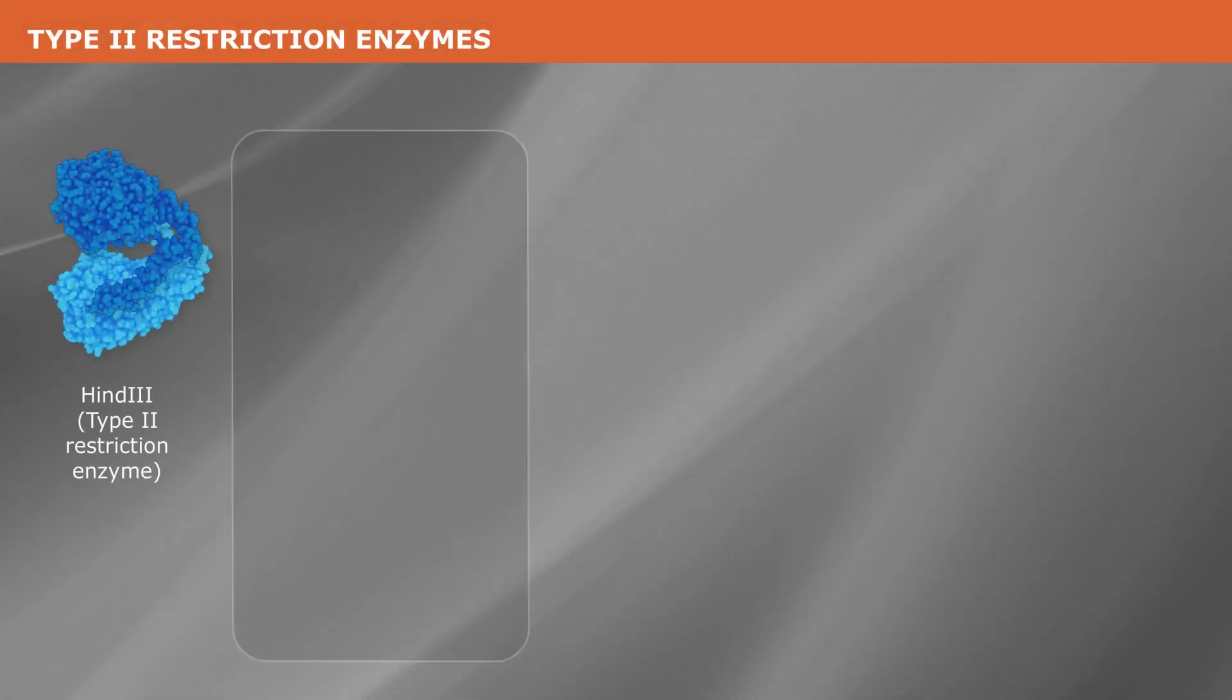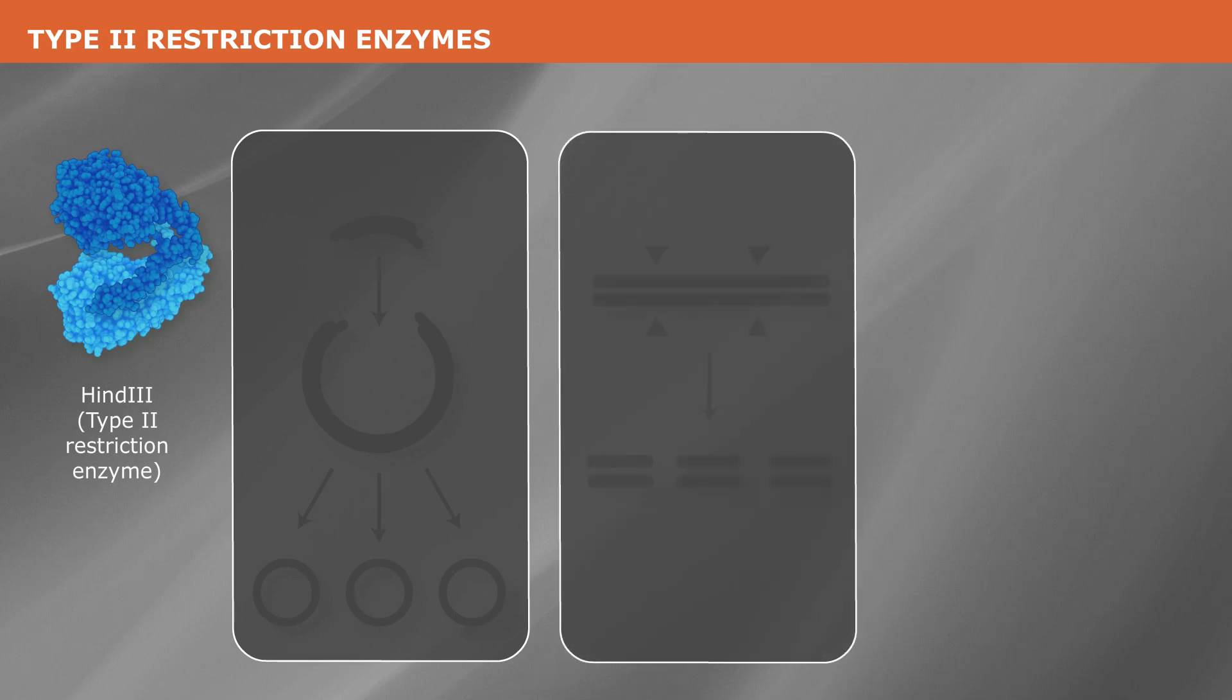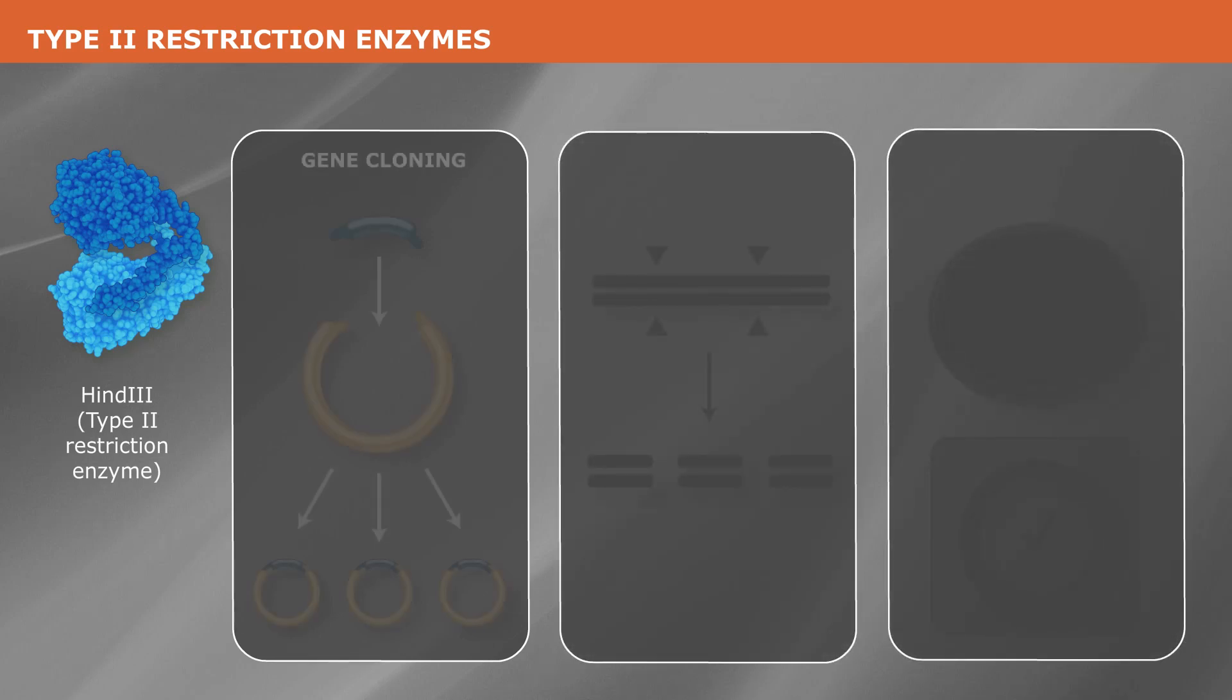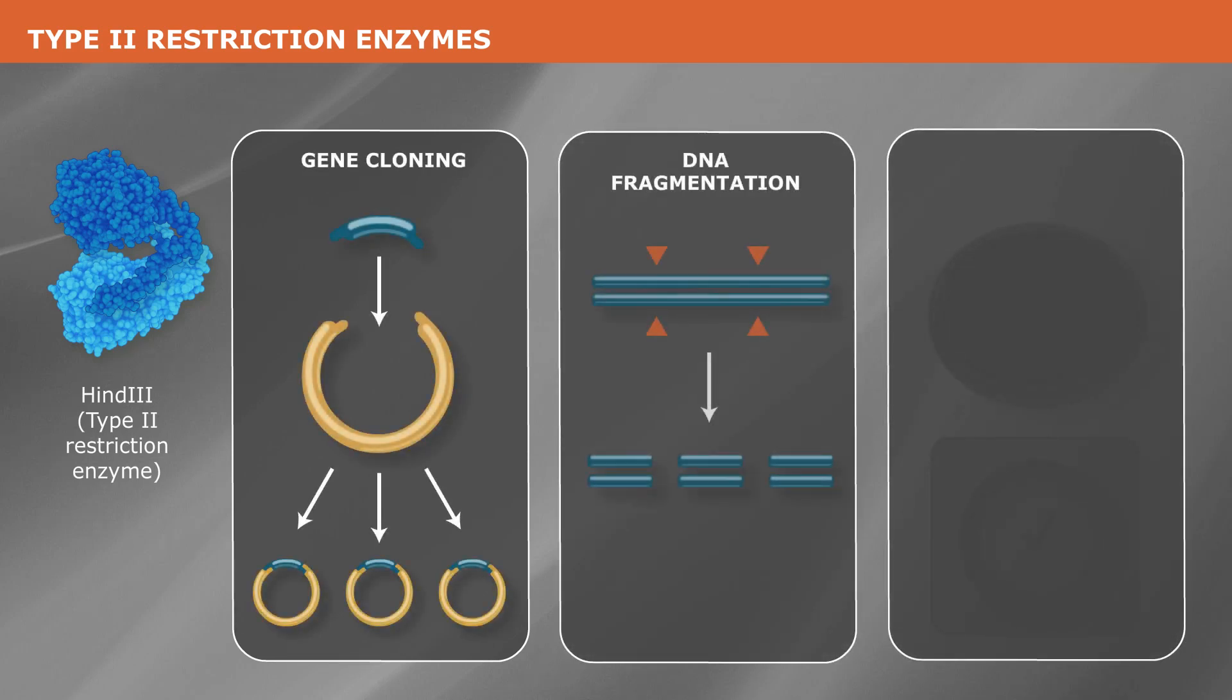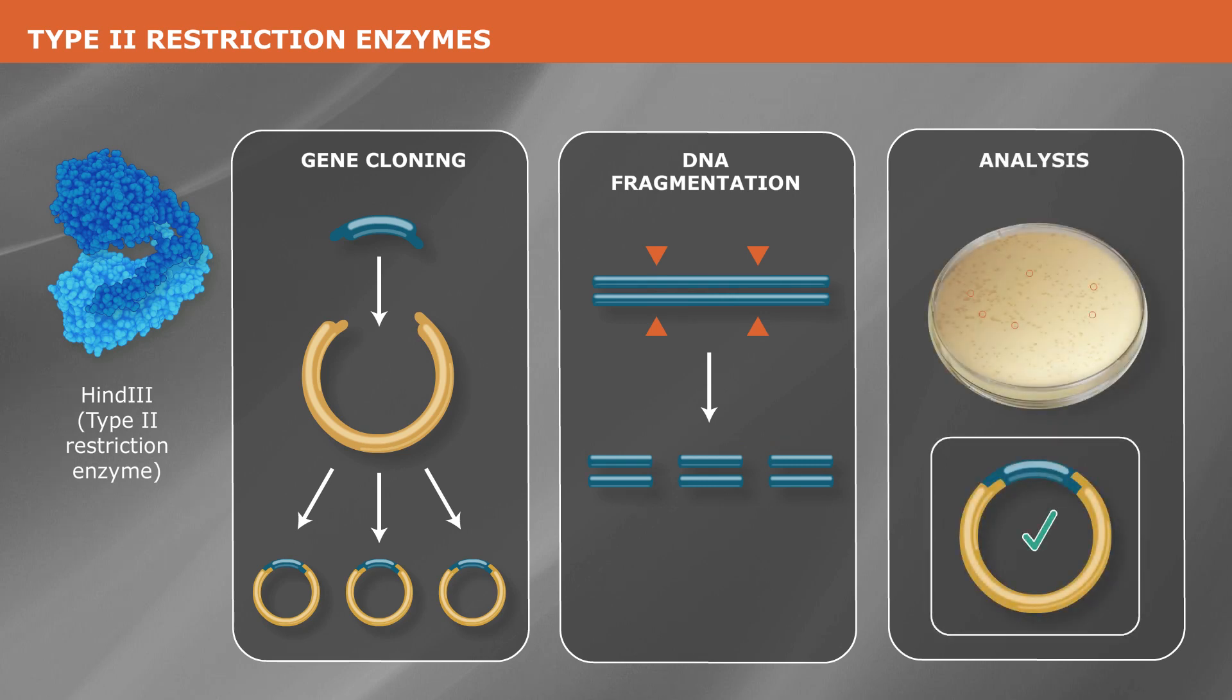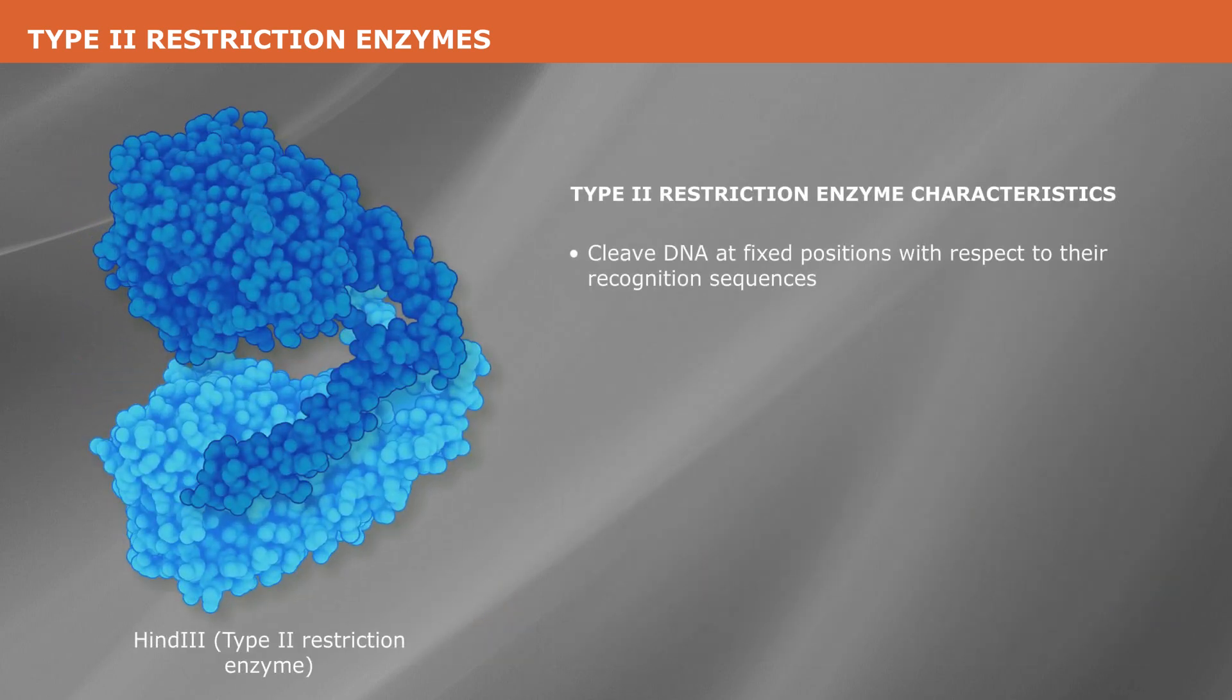Type 2 restriction enzymes are the kind used for most molecular biology applications, such as gene cloning, DNA fragmentation, and analysis. They cleave DNA at fixed positions with respect to their recognition sequences.